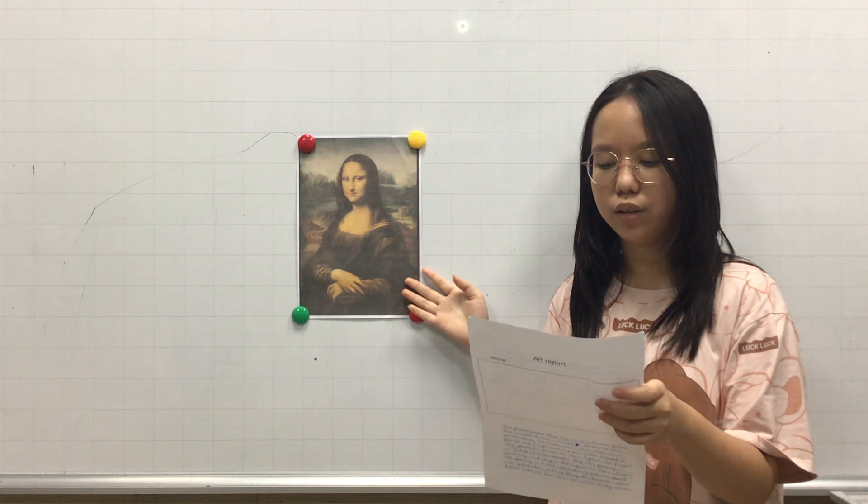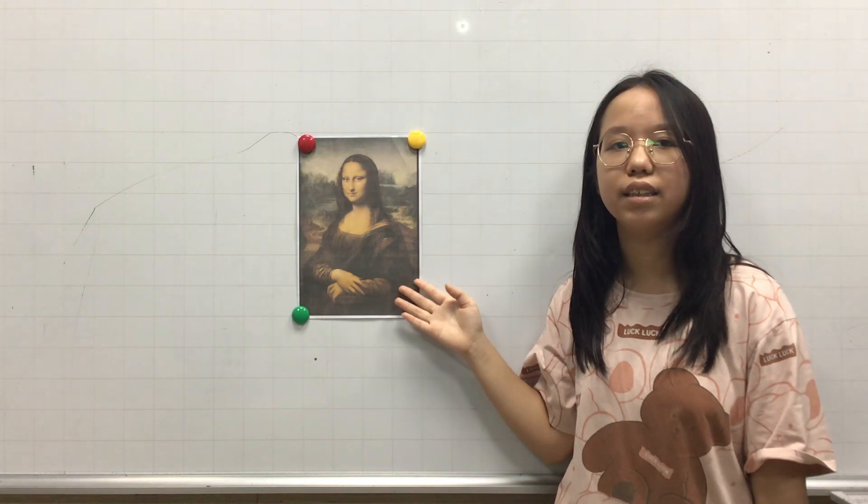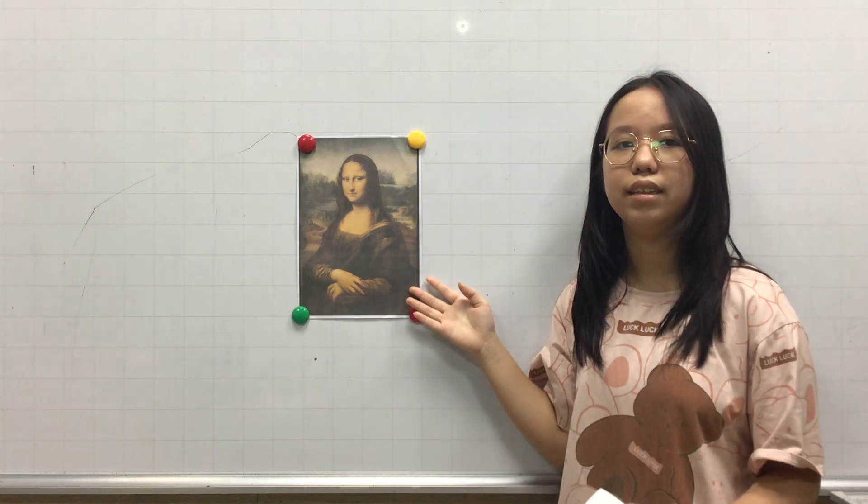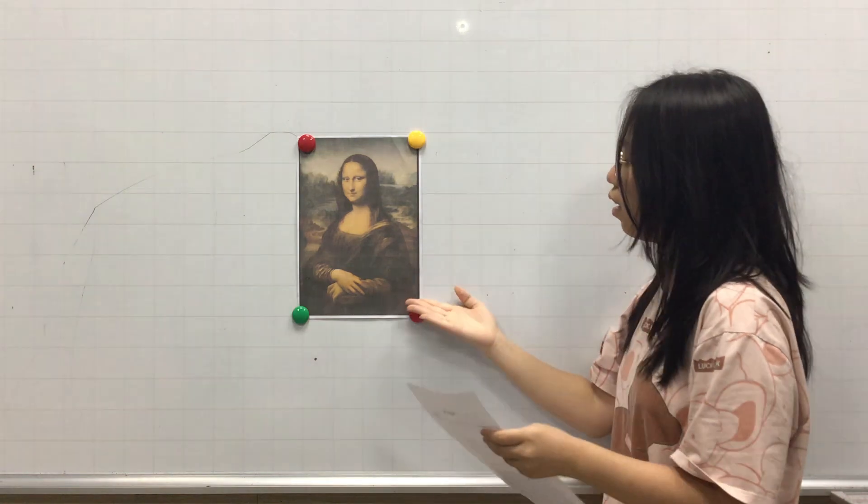The Mona Lisa also contains many things, numbers and letters. On the face of Mona Lisa, it's said to have a golden ratio.